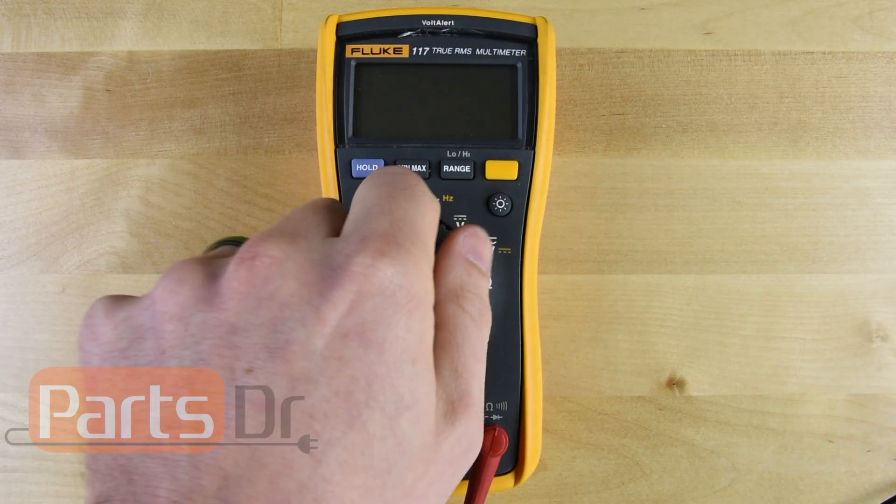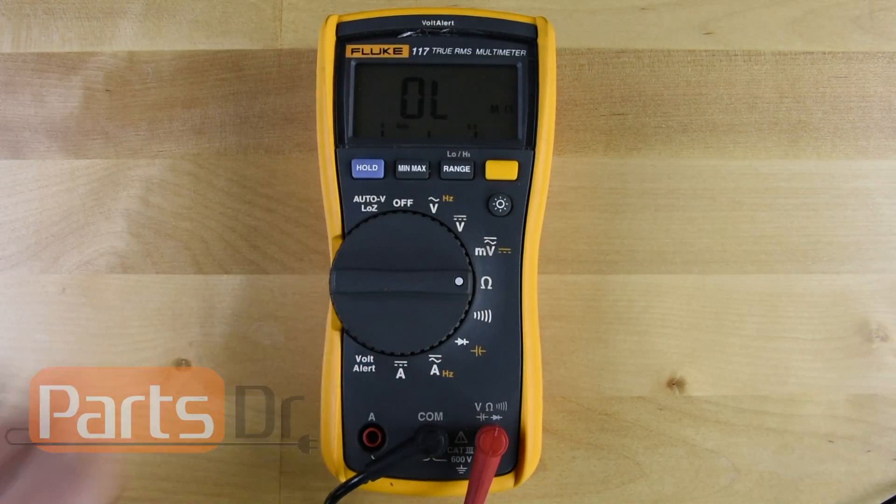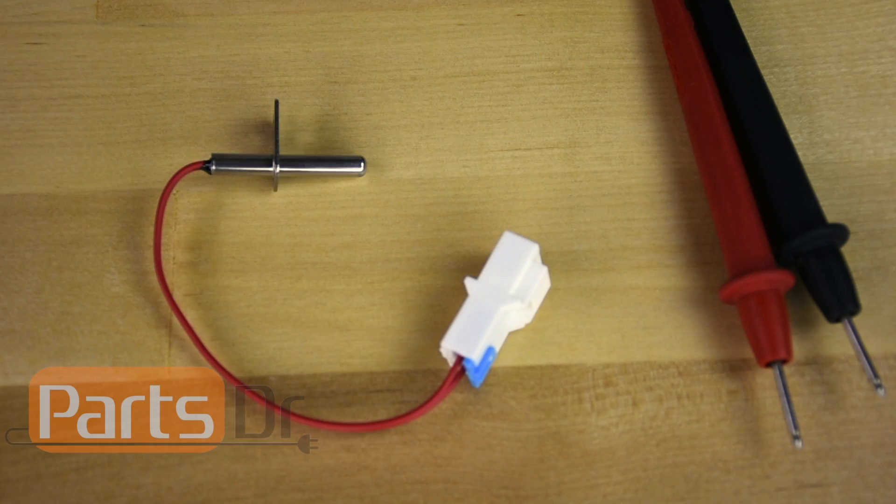If you have an auto-ranging multimeter, then turn the meter to the ohm setting. If you have a manual-ranging multimeter, then you'll need to set the meter to the 20k or 40k setting.